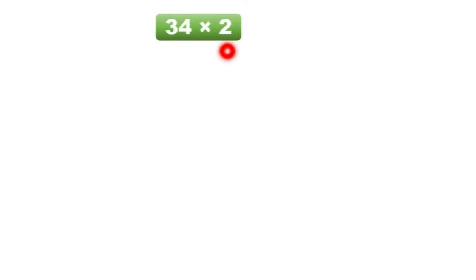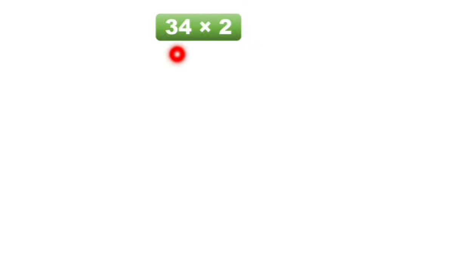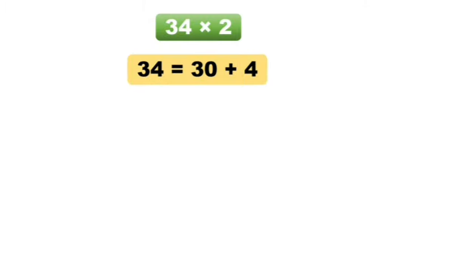So let us solve 34 multiply by 2 using the lattice method. Yaha example ma, 34 haa multiplicant ahe aani 2 haa multiplier ahe. Jalatra, ya 34 cha expanded form right koreung gheo: 30 plus 4 is equal to 34.